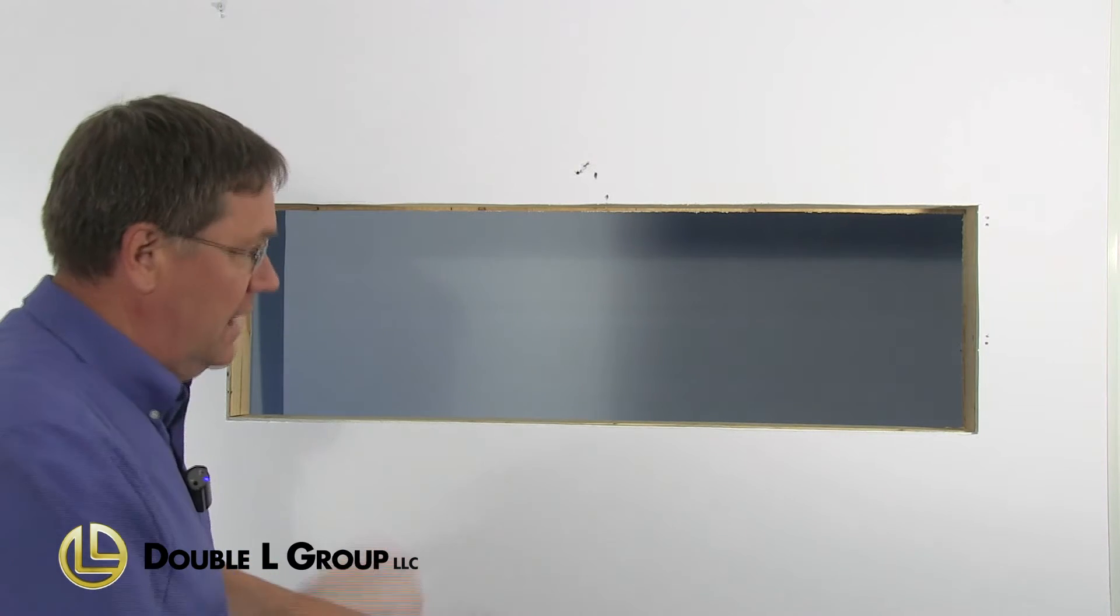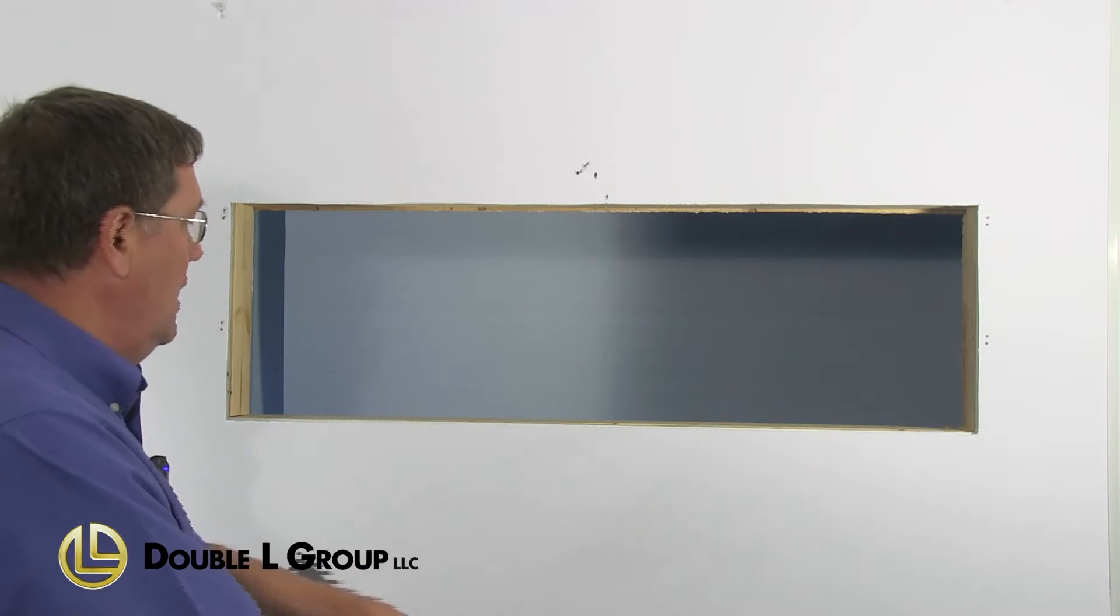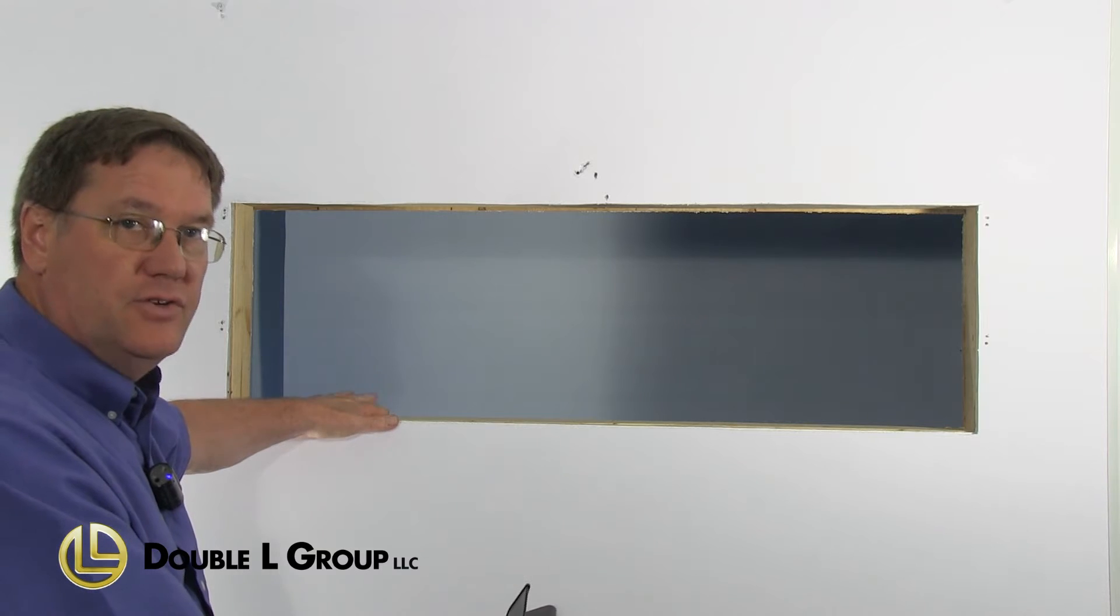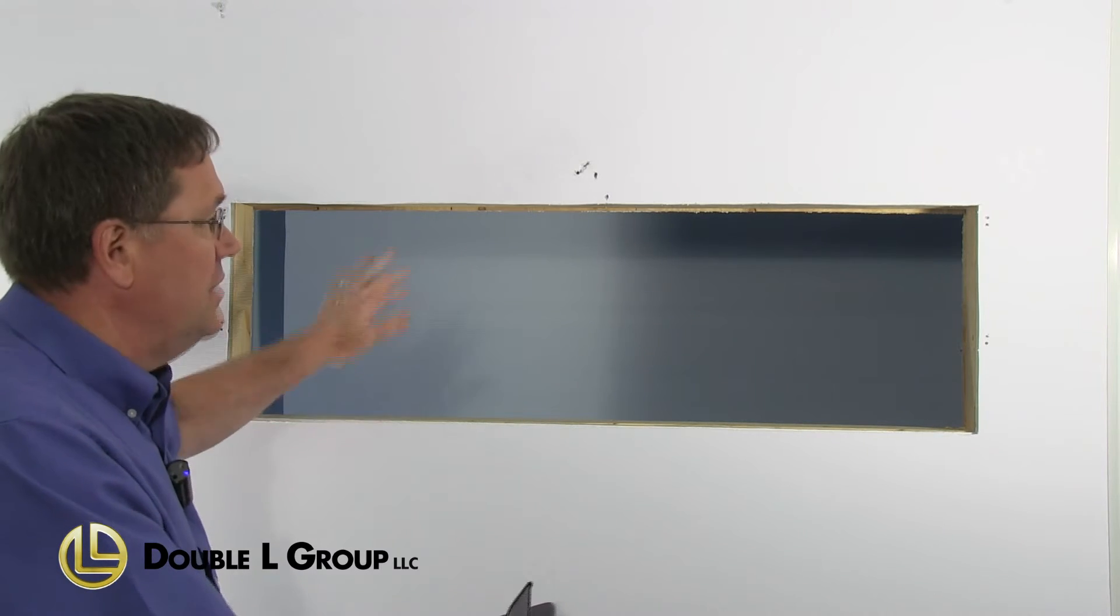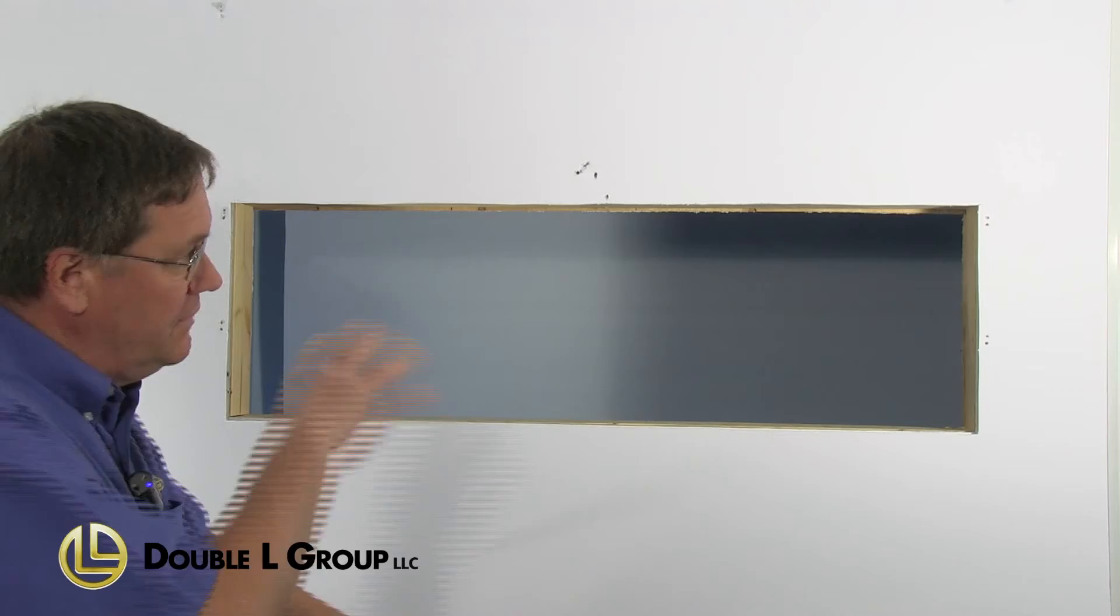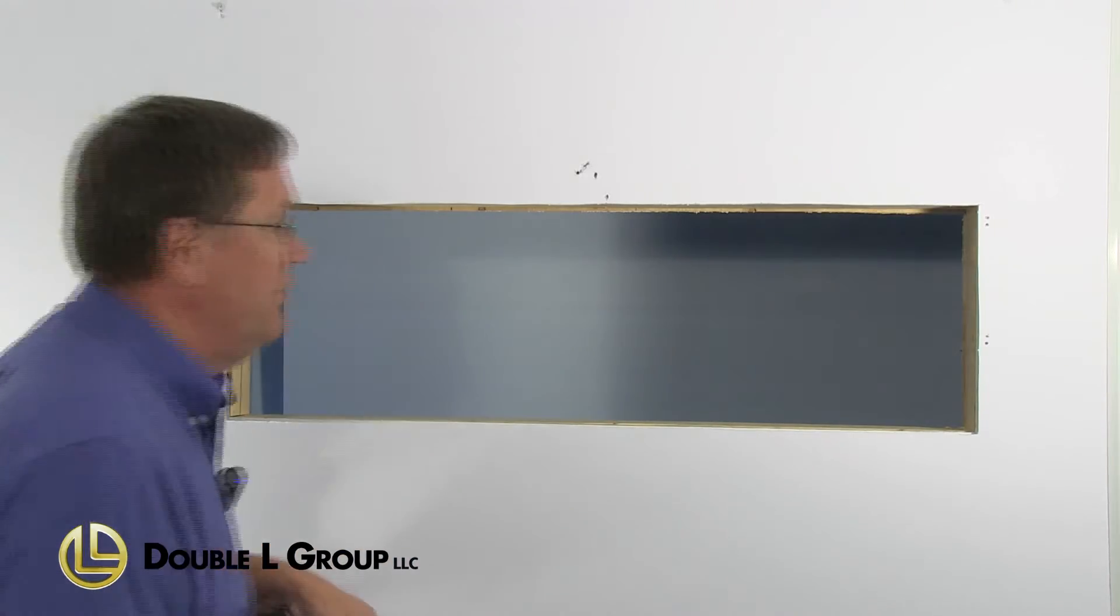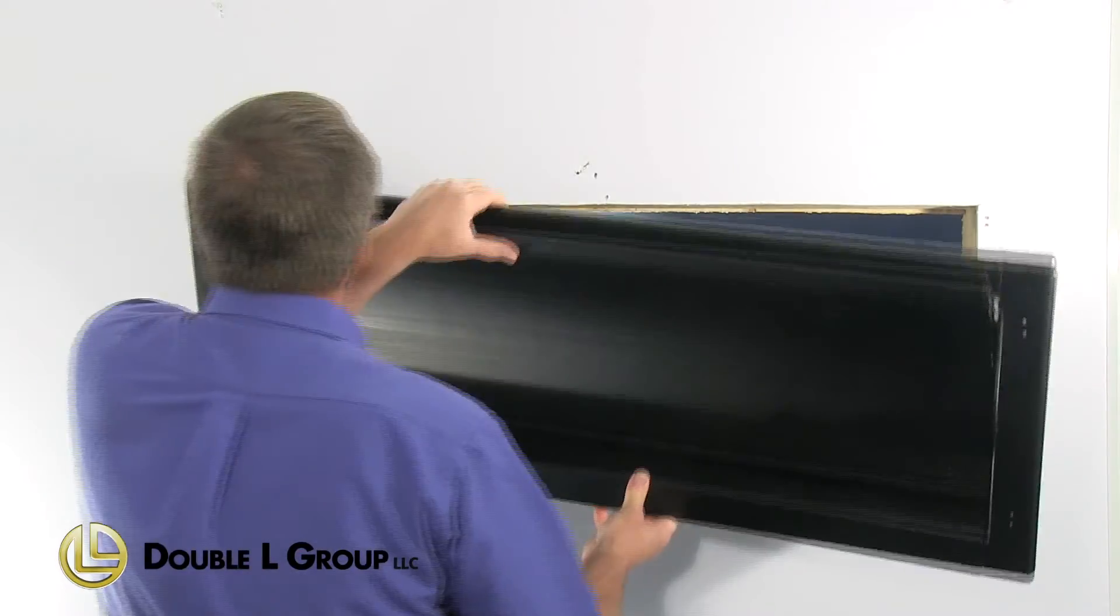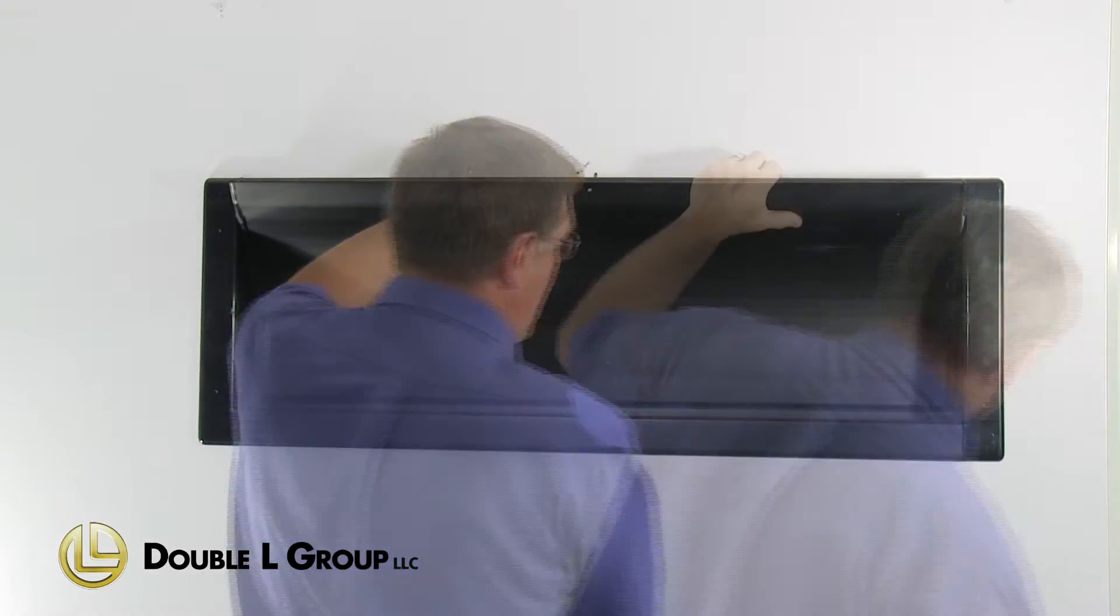Now that we've got our inlet all put together, we're going to mount it into the wall. You'll have to have your framed opening—you'll want to look on your instruction sheet to make sure you have the right framed opening for the right inlet. We've got this framed in for the 4413. We're going to stick it into the hole in the wall and screw the sides on first.